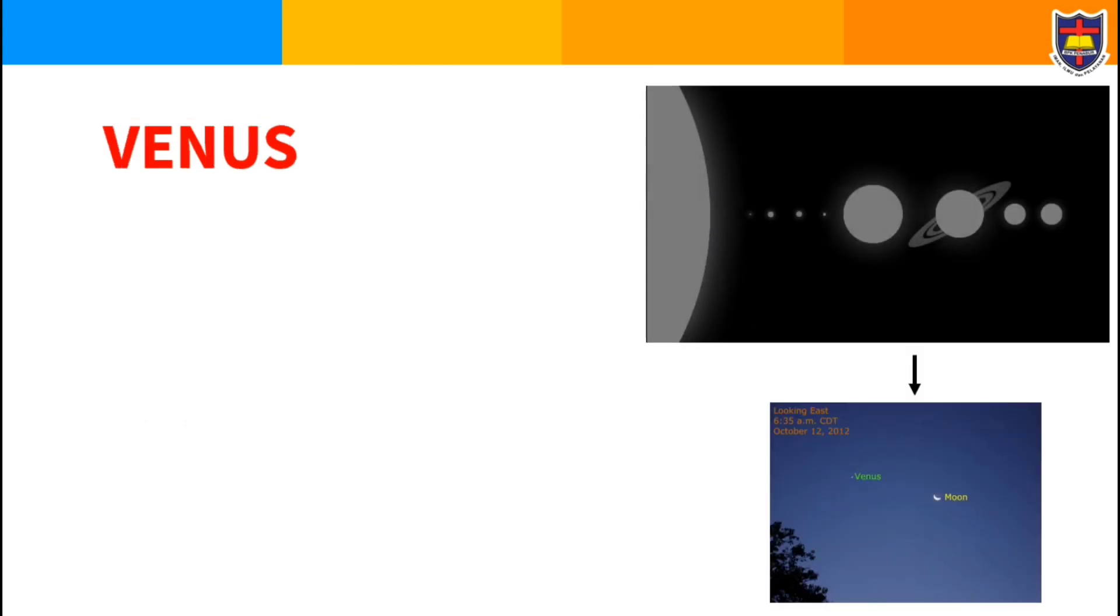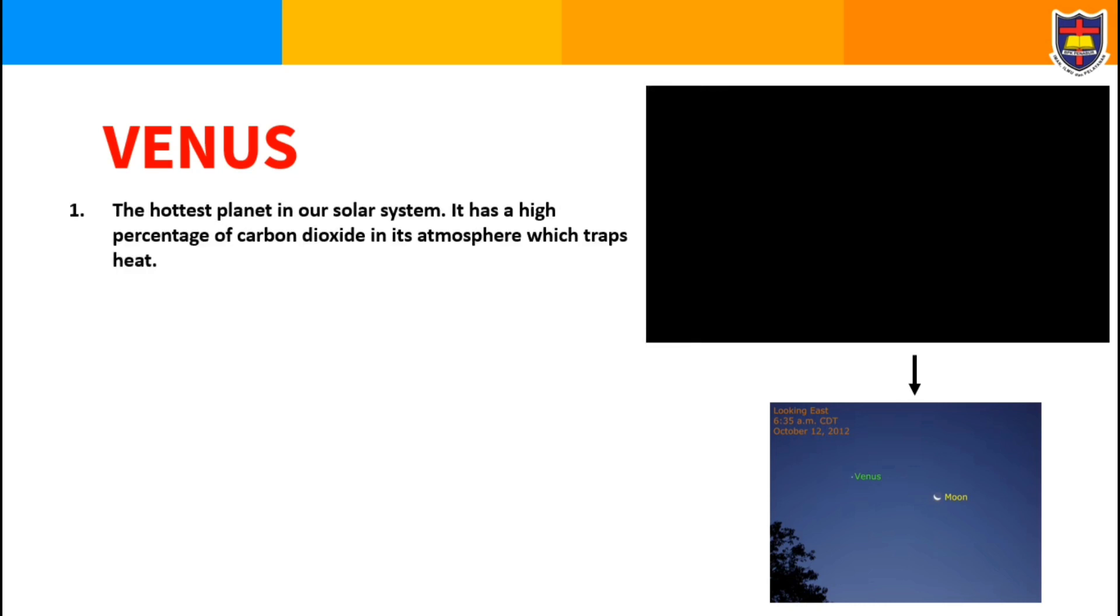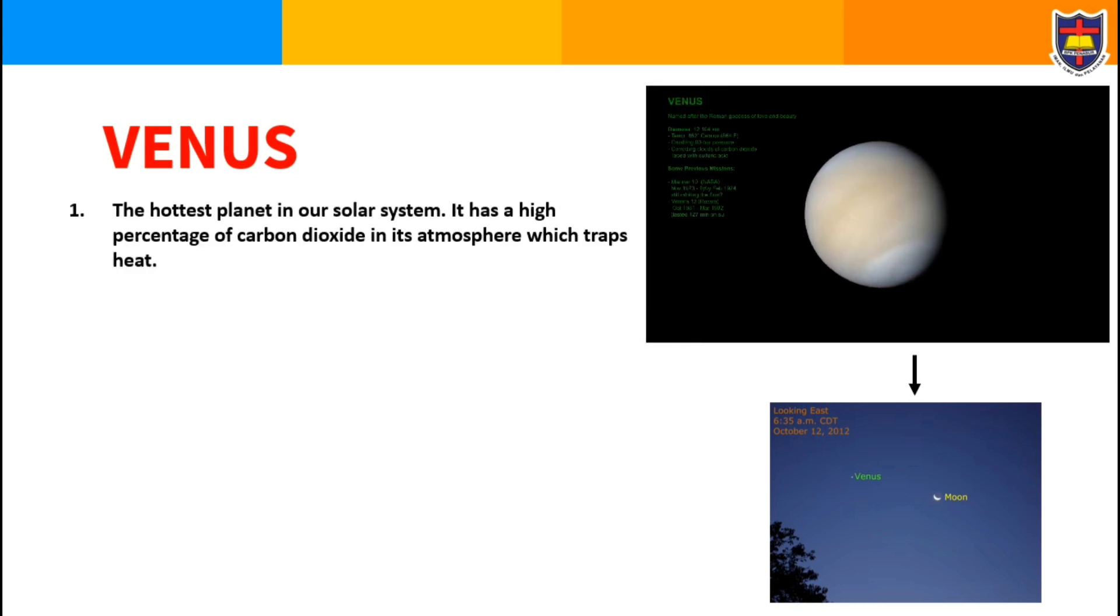The second planet is Venus, the hottest planet in our solar system. It has a high percentage of carbon dioxide in its atmosphere which traps heat.